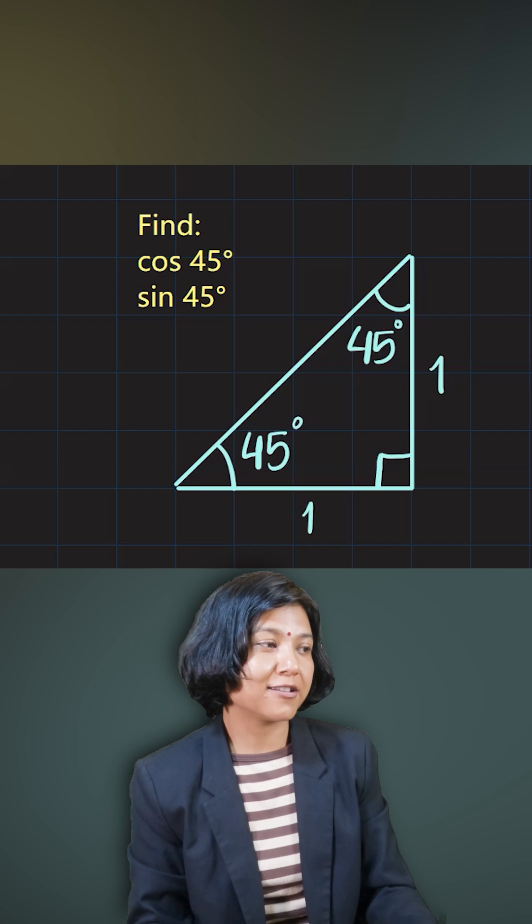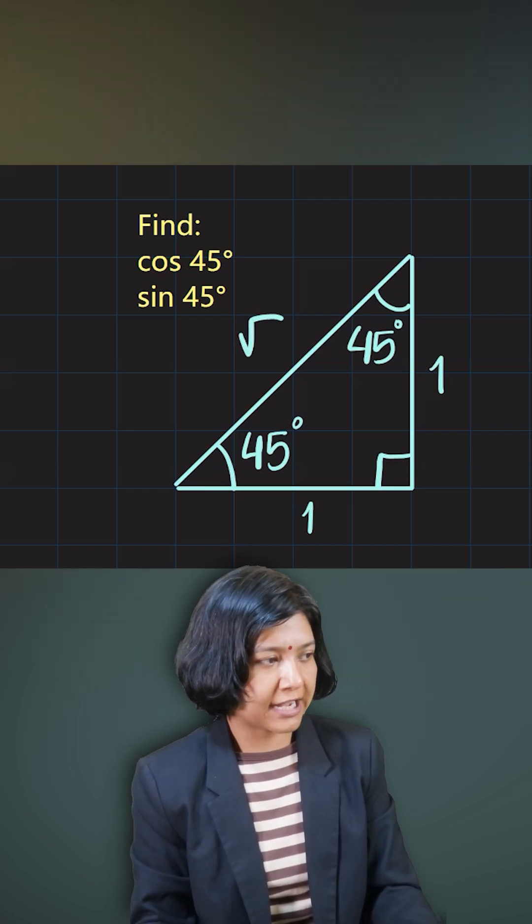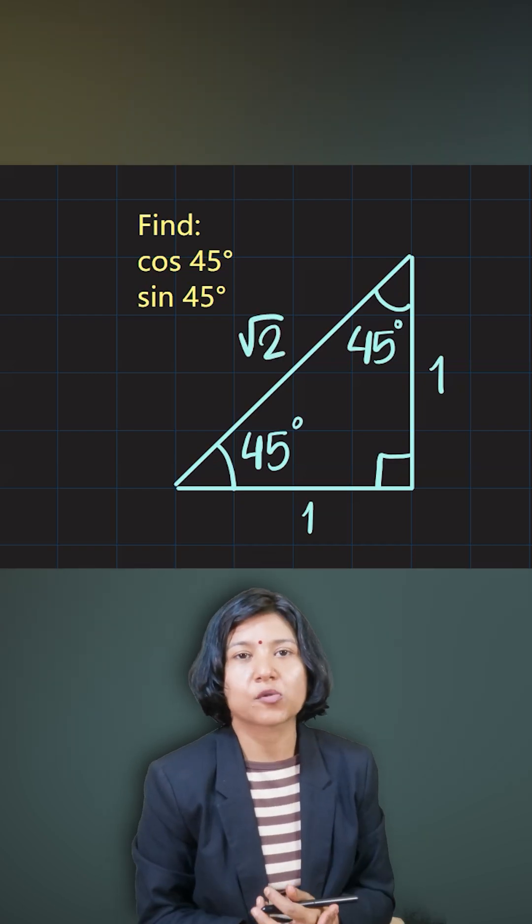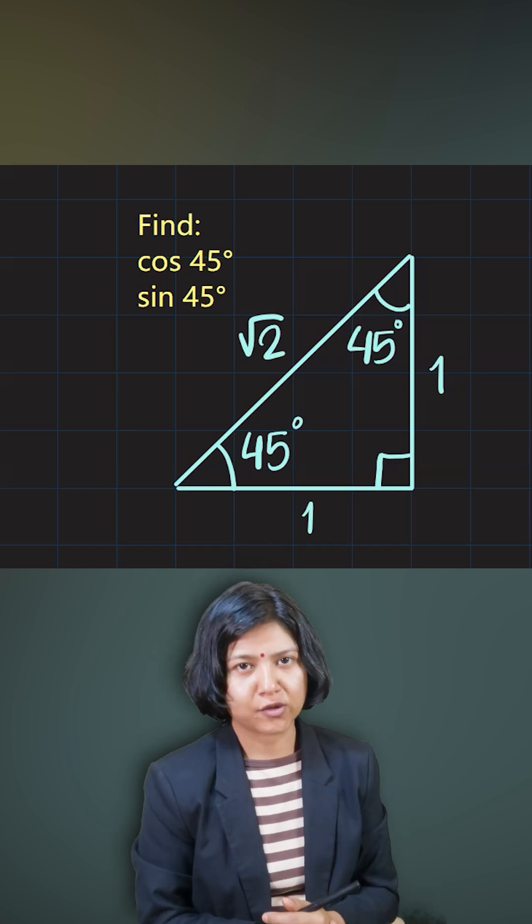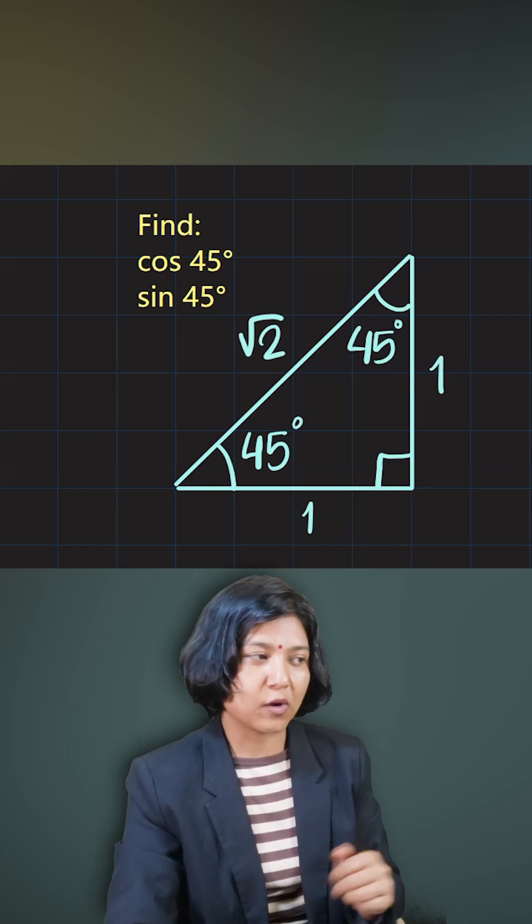then the hypotenuse will always be root two times the length, or it will always be square root two times whatever the length we have for the legs. So if it is one, then it will be just root two times one, which is root two.